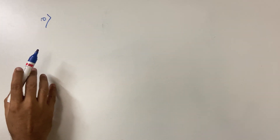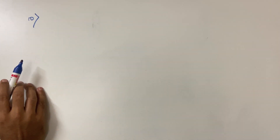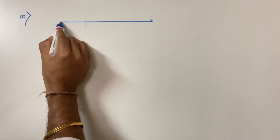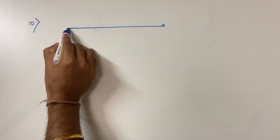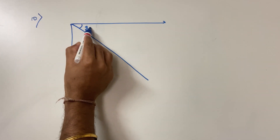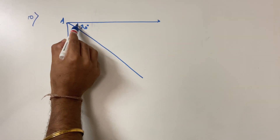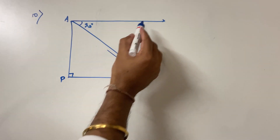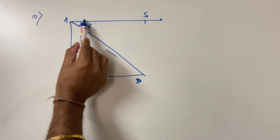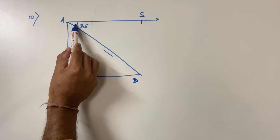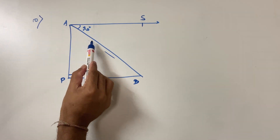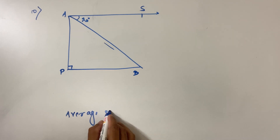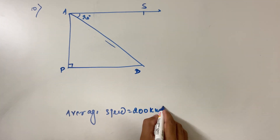Sum number ten: when landing at an airport, a pilot makes an angle of depression of 20 degrees. The aeroplane is going straight and needs to come down to land. The angle is 20 degrees. The average speed of the aeroplane is 200 km per hour, and the pilot reached the ground in 54 seconds.